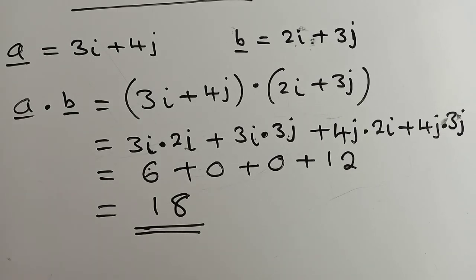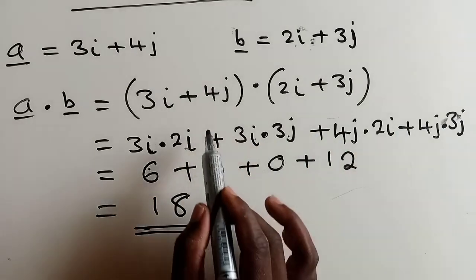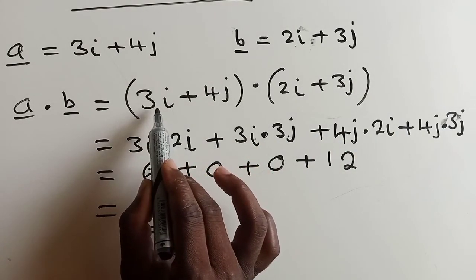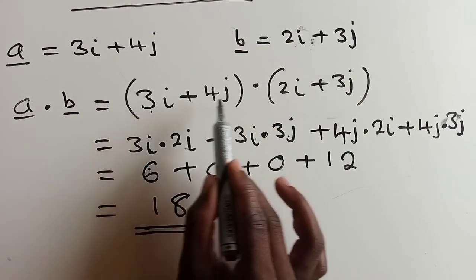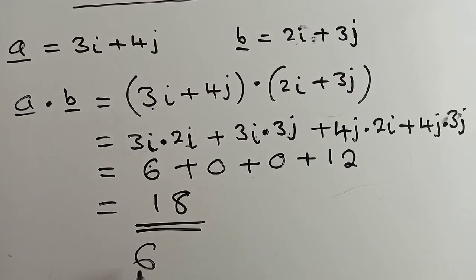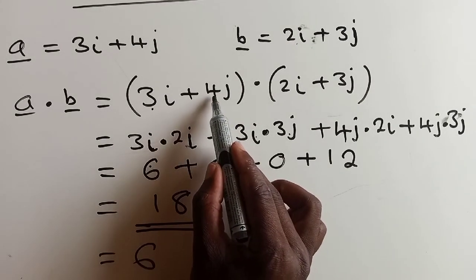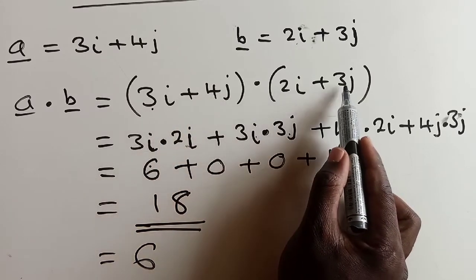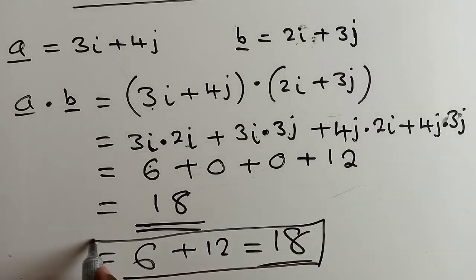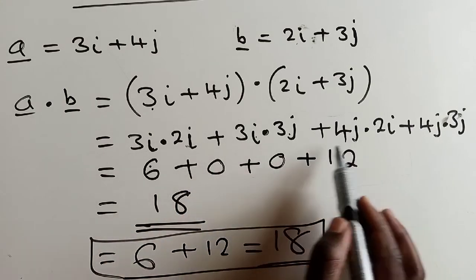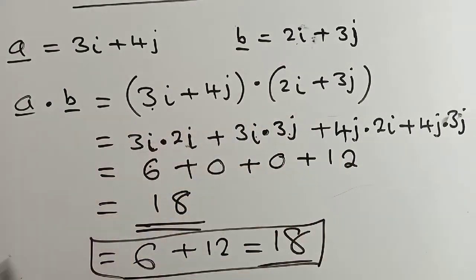There is a simple method to use. And if you don't want to take all these steps, you can just do it like this. You just multiply the corresponding entries. For example, this is I and this is I. You just say 3 times 2, which is equal to 6. And here, you say 4 times 3, which is equal to 12. And it will give you 18. So this is one of the simplest ways. Instead of going all these steps, you just multiply the corresponding entries.